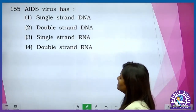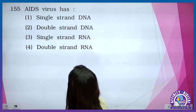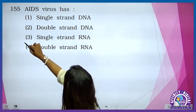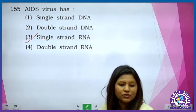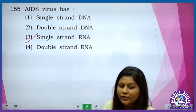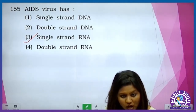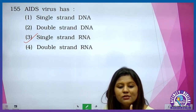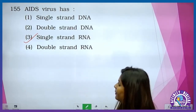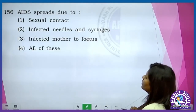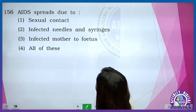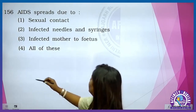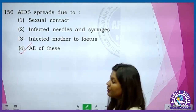HIV virus has single stranded RNA as its genetic material. Bachcho do single stranded RNA hota hai — there is never double stranded RNA, two are there but always single stranded RNA. AIDS spreads due to sexual contact, infected needles and syringes — it's all of these. Very simple question.